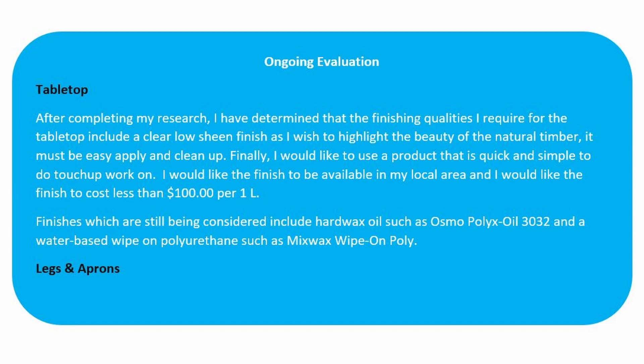My ongoing evaluation sounds a little like this: After completing my research, I have determined that the finishing qualities I require for the tabletop include a clear low-sheen finish as I wish to highlight the beauty of the natural timber. It must be easy to apply and clean up. Finally, I would like a product that is quick and simple to do touch-up work on. I would like the finish to be available in my local area and to cost less than $100 per litre. Finishes which are still being considered include hard wax oil such as Osmo Polyx 3032, or a water-based wipe-on polyurethane such as Minwax Wipe-on Poly. Now go through and repeat this statement for any of the other sections you need to address in the ongoing evaluation.